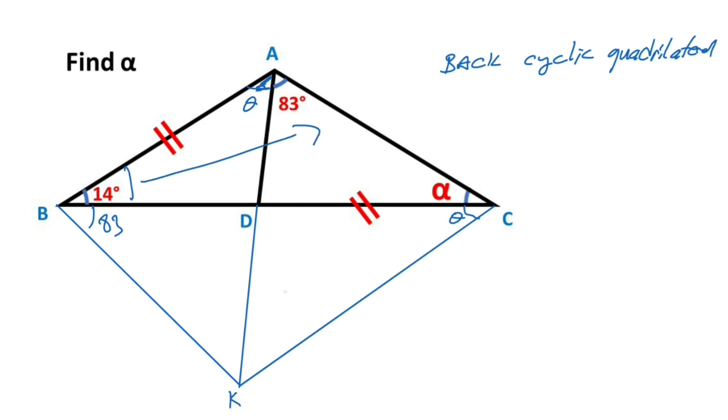And then notice that these two angles have same side, that means here this angle must be 14 degrees. For this triangle, we know that sum of the interior angles equals 180 degrees. Therefore, alpha plus theta equal 83 degrees.